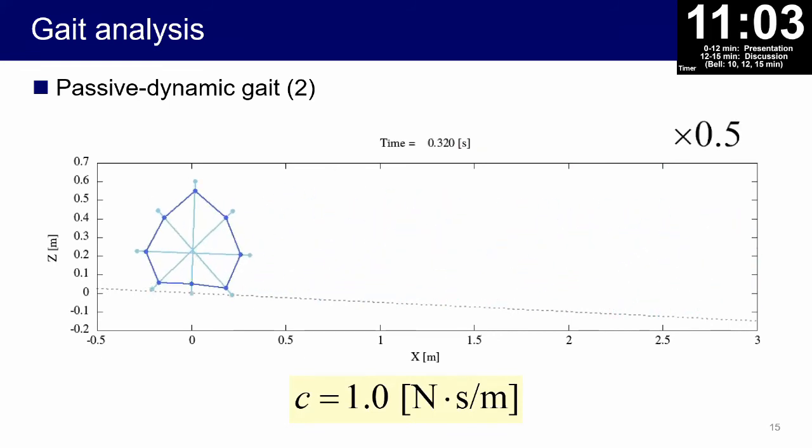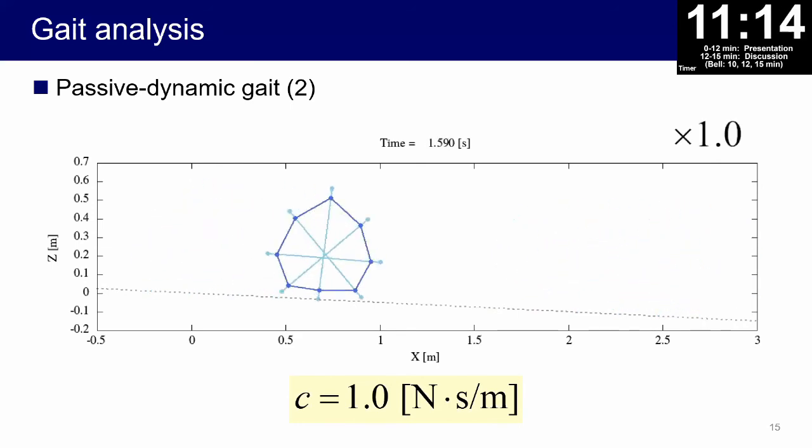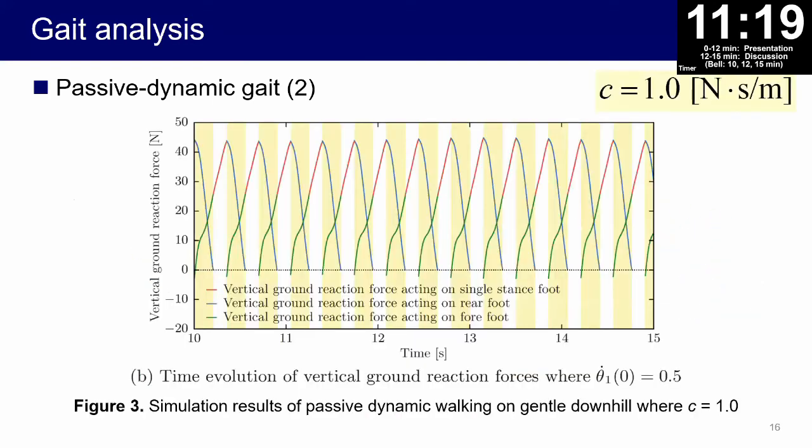We added damping effect parallel to the elastic element to stabilize the generated passive dynamic motion. First we set the viscosity coefficient to 1.0. We can see that the generated passive dynamic gait is smoother than the previous one. From figure 3b we can see that the behavior of the vertical ground reaction forces also became periodic significantly by the effect of viscosity. However, the condition of unilateral constraint cannot be met immediately after every impact.